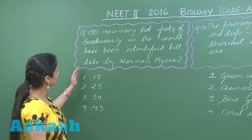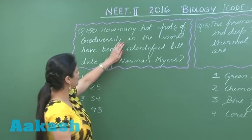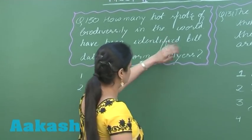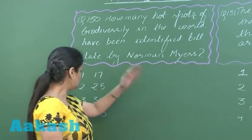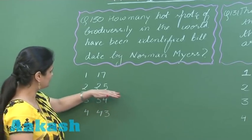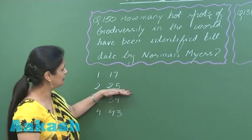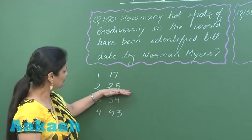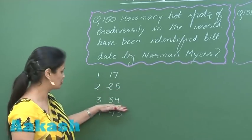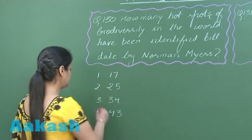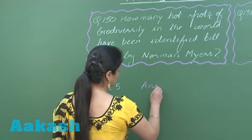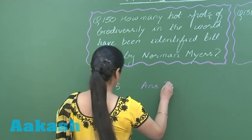Question number 130: how many hotspots of biodiversity are there in the world? According to earlier data, 25 hotspots were there, but the present day status is 34 hotspots. So the right option for this question is option number 3.